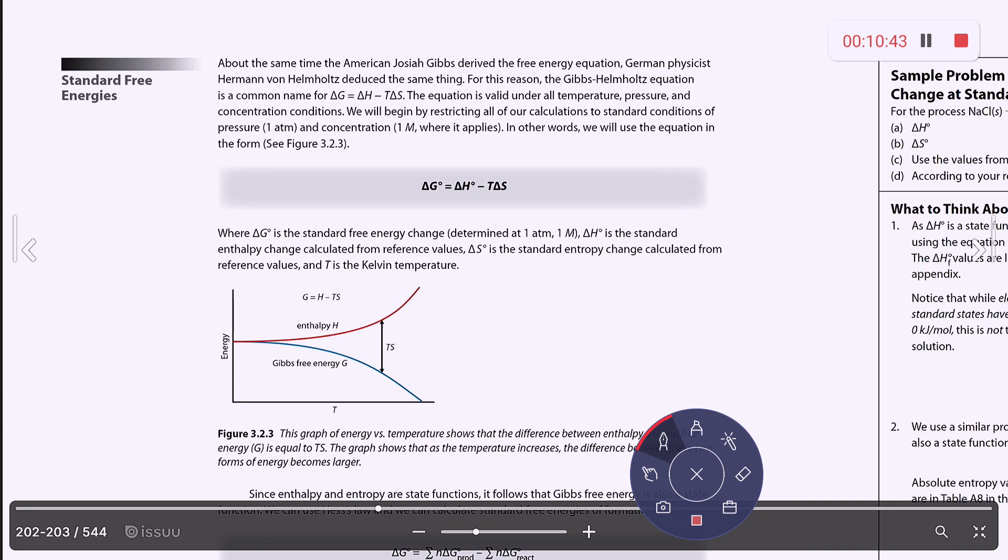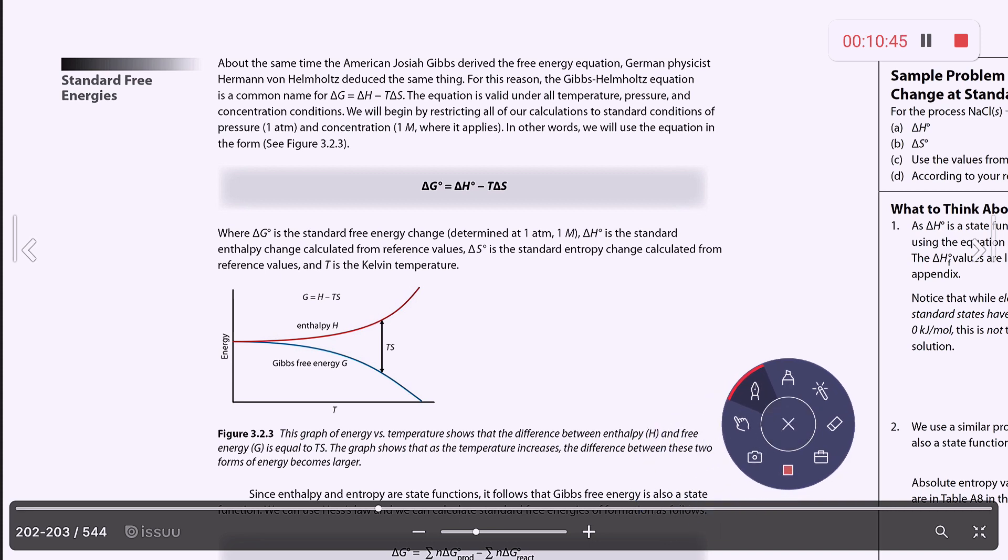So around the time that Gibbs derived his free energy equation, there was a German physicist called Helmholtz that deduced the same thing. So this is why the Gibbs Helmholtz equation is a common name for delta G equals delta H minus T delta S. You will often hear people refer to the equation as that. And that equation works at all temperatures, pressures, and concentrations. But if we're looking at standard conditions, standard conditions would be a pressure of one atmosphere, a concentration of one molarity if it applies, you're going to get this equation here.